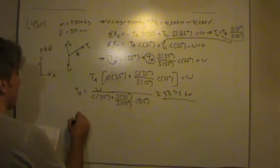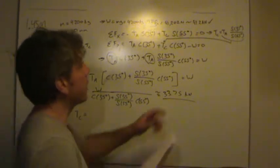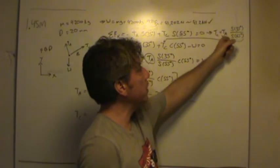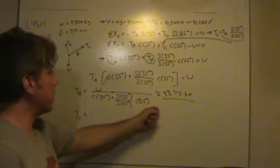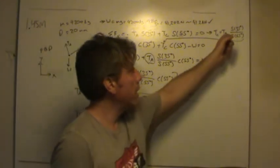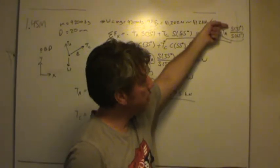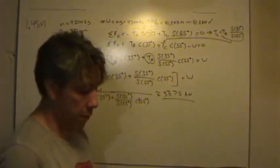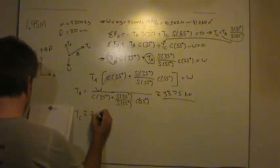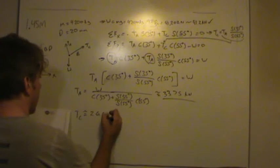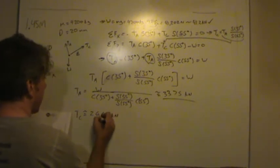Solving for the tension in rod C is pretty straightforward because we've got this equation over here that relates the tension in C to the tension in A. So I'm not going to write it again with all the numbers plugged in. Just realize the tension in A is 33.75. Plug that in here. Plug in the ratio of sine 35 over sine of 55, and you've got it. And what I got was about 26.63 kilonewtons.